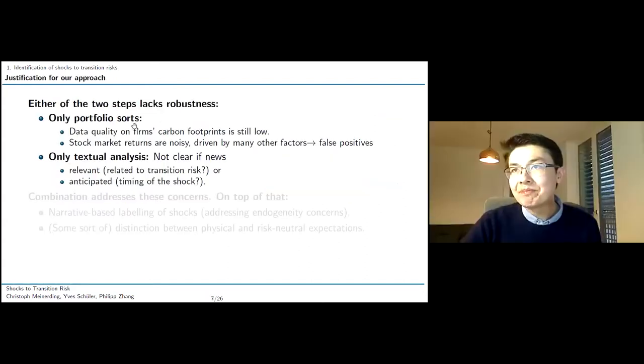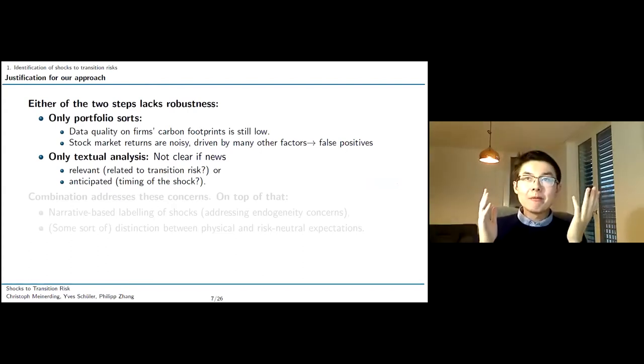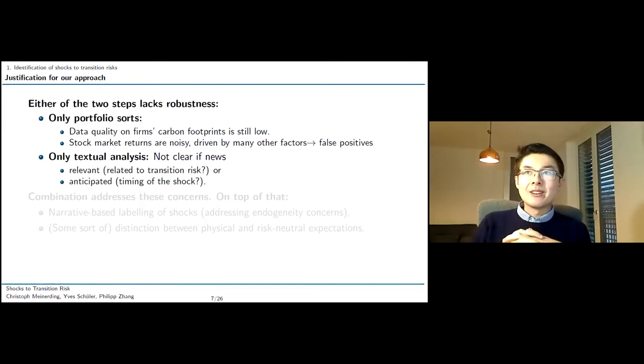So the main reason why we combine these approaches is basically a question of robustness. The main concern in this exercise is robustness. There are so many degrees of freedom, and in particular because transition risks is not very strongly defined in the literature at the moment. We believe that either approach on its own is not stable enough to produce reliable results. First of all, if we only look at portfolio sorts, we take ESG data from Thomson Reuters icons or fairly standard sources. If you have worked with ESG data before, you most likely know that data availability and data quality in that area is still fairly low but increasing over the last few years. So it is unclear to us how reliable these values actually are.